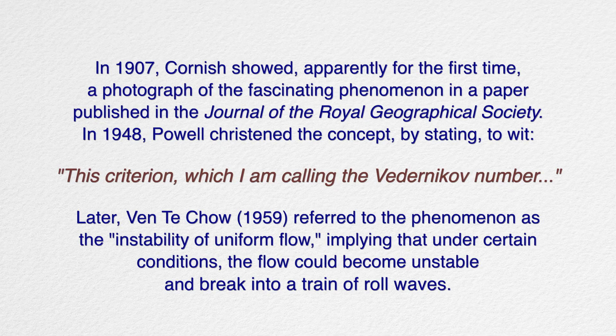In 1907, Cornish showed, apparently for the first time, a photograph of the fascinating phenomenon in a paper published in the Journal of the Royal Geographical Society. In 1948, Powell christened the concept by stating, to wit, this criterion, which I am calling the Bedernikov number. Later, Venti Chao referred to the phenomenon as the instability of uniform flow, implying that under certain conditions the flow could become unstable and break into a train of roll waves.